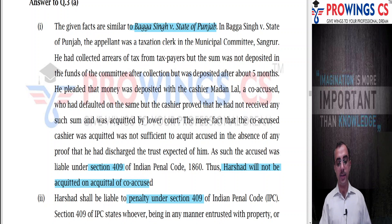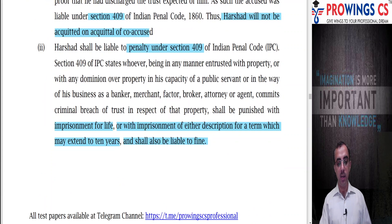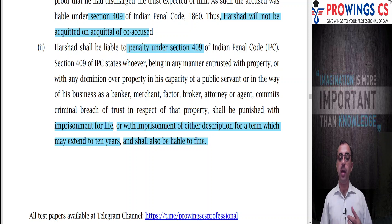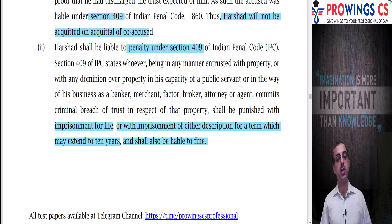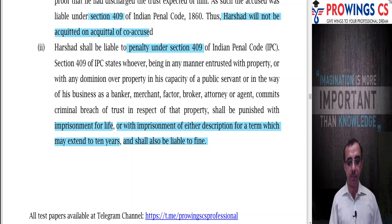For the second part regarding penalty: under Section 409, whoever, being entrusted with property or having dominion over property in the capacity of a public servant, or in the way of business as a banker, merchant, factor, broker, attorney, or agent, commits criminal breach of trust, shall be punishable with imprisonment for life or with imprisonment of either description which may extend to 10 years, and shall also be liable to fine.